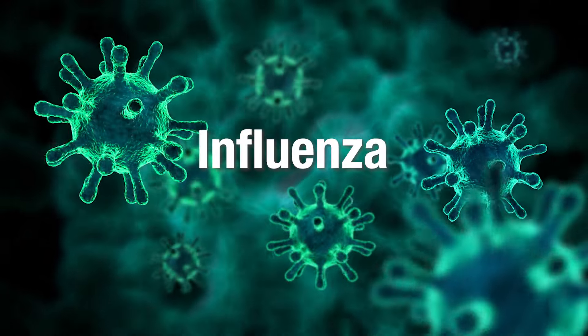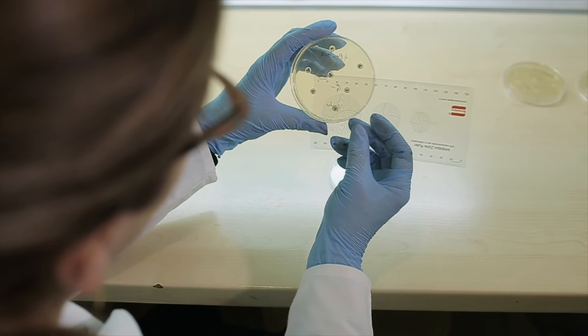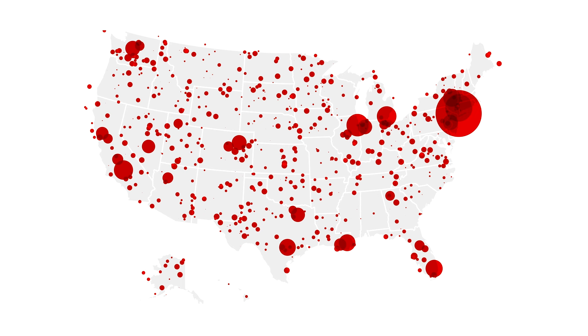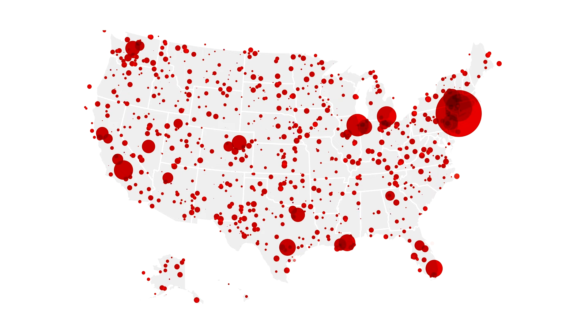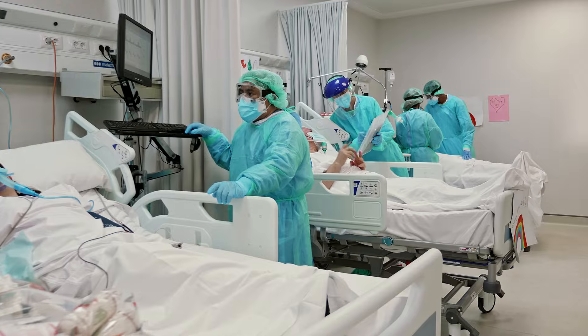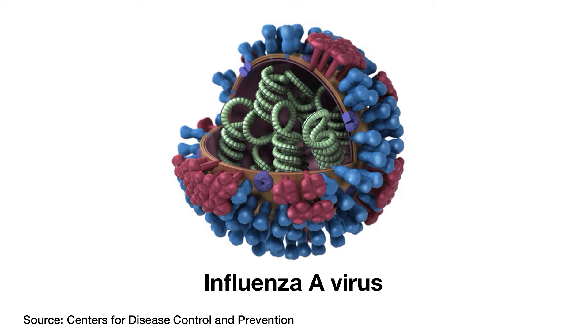Influenza is more commonly known as the flu. Let's talk about how it's spread. Influenza A is commonly found in humans and animals, while influenza B mainly affects humans. Both flu viruses are highly contagious and can spread through respiratory droplets. Both can cause seasonal epidemics, but influenza A viruses are the only ones that can cause a pandemic — a global spread of disease — because they can mutate more rapidly than influenza B viruses.